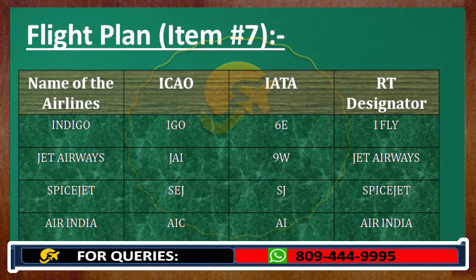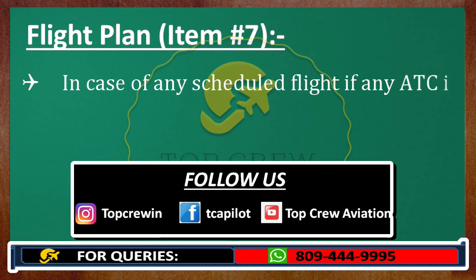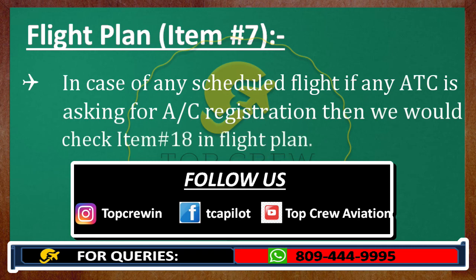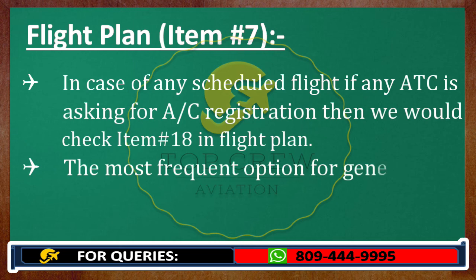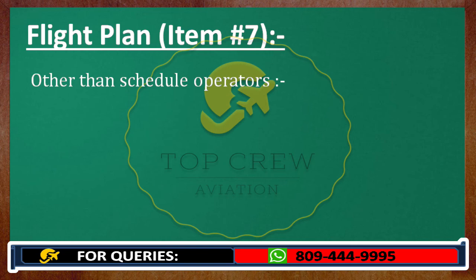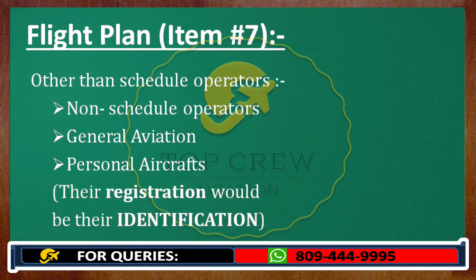In a similar fashion, we can read about Jet Airways, SpiceJet, and Air India. In case any ATC is asking for aircraft registration for a scheduled flight, we would always check item number 18 in the flight plan to get that information. The most frequent option for general aviation is aircraft registration — which means that other than scheduled operators, like non-scheduled operators, general aviation, and personal aircraft, their registration would be their identification. For scheduled operators, identification would be provided by the operator.